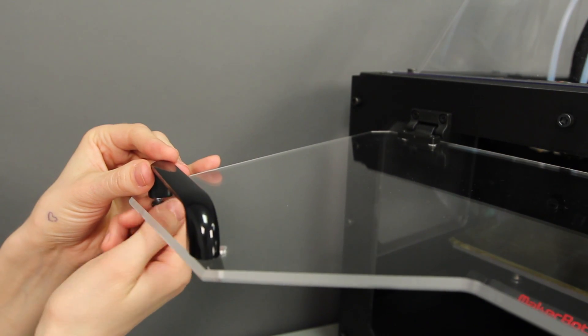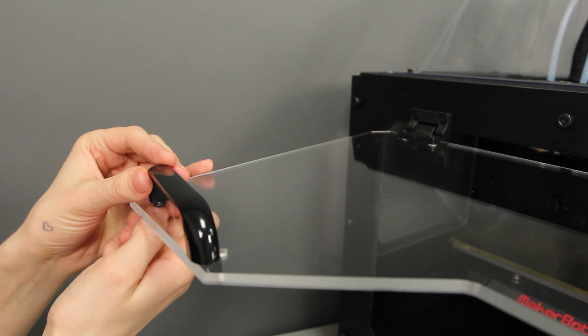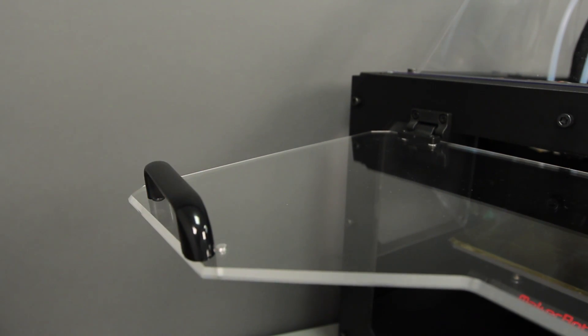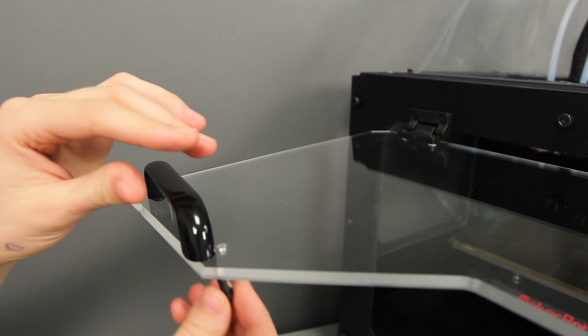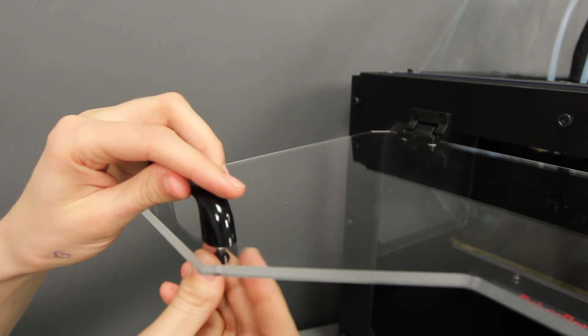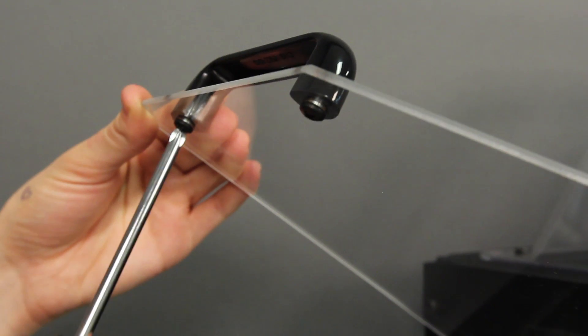Make sure to align the holes in the handle with the holes on the enclosure door. Use your fingers to thread each bolt through the holes and then use a Phillips head screwdriver to tighten the bolts down.